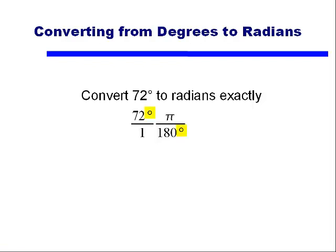Now you can see that the degree in the numerator and the degree in the denominator will reduce out and will be left behind with no units. But that's good, because radians are unitless. So if I take this fraction, do my multiplication, I believe I can pull out a factor of 9 from the numerator and the denominator. And that would leave me with 8π divided by 20. And then I see another factor of 4 I can divide out, and that leaves me with an answer of 2π divided by 5.